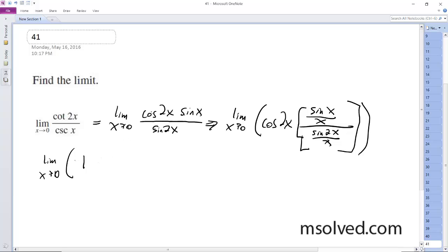and then, let me just do this, and then the sine, the approach of sine of x over x as it approaches 0 is 1,